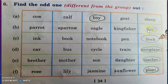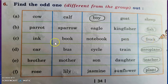Next: ink, book, notebook, pen, frock. In this group, frock is different — it is odd — so we have to circle it.